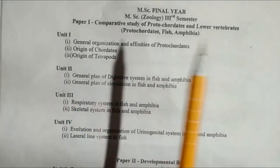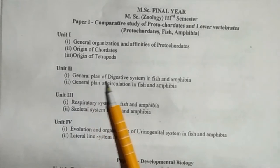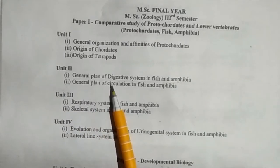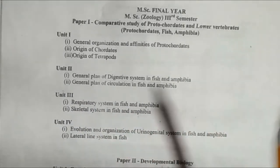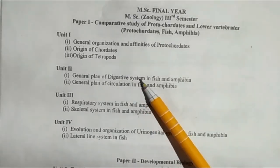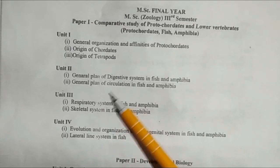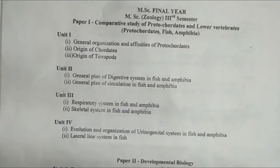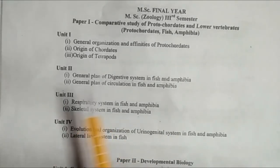Unit Second has two topics: first is the general plan of the digestive system in fish and amphibia, and second is the general plan of circulation in fish and amphibia. So in this unit we study about the digestive system and circulation in fish and amphibia.